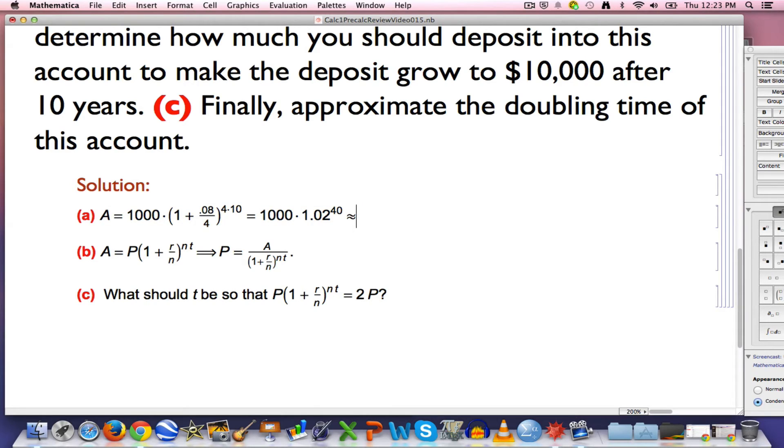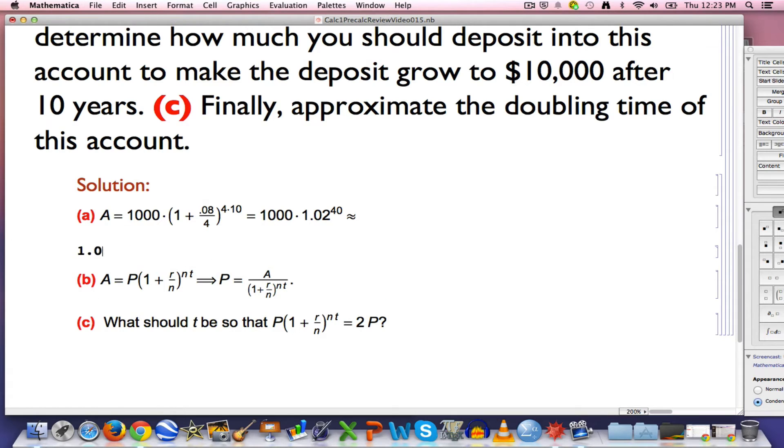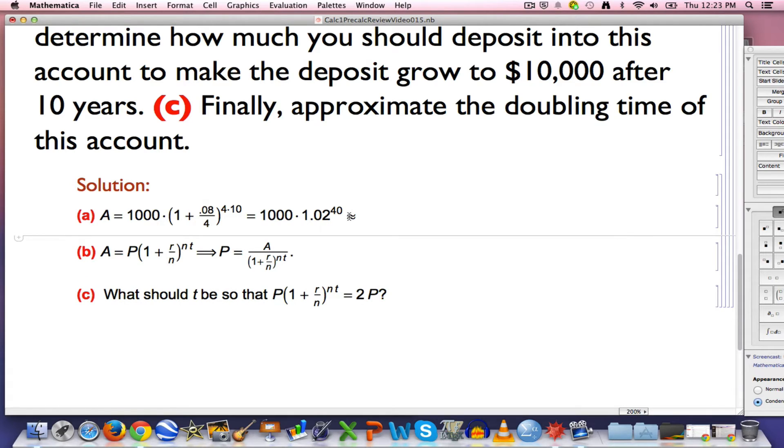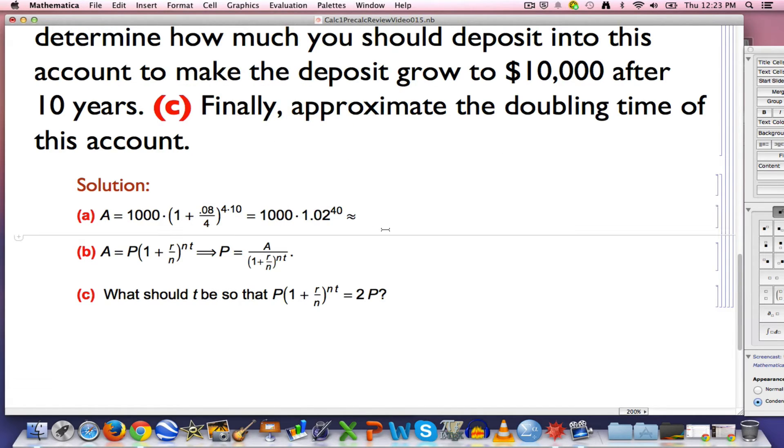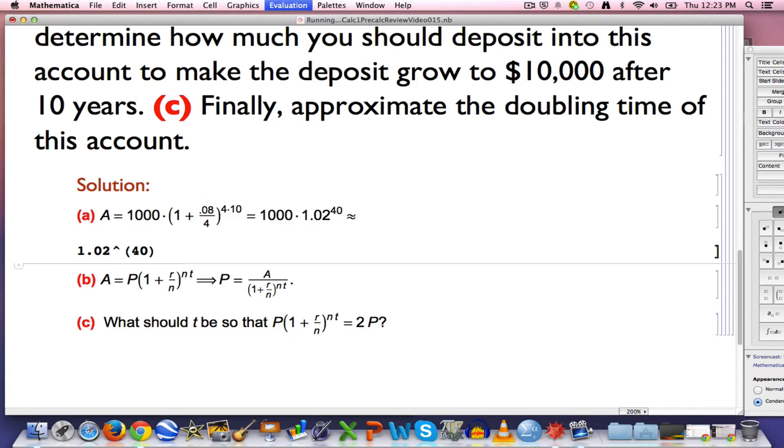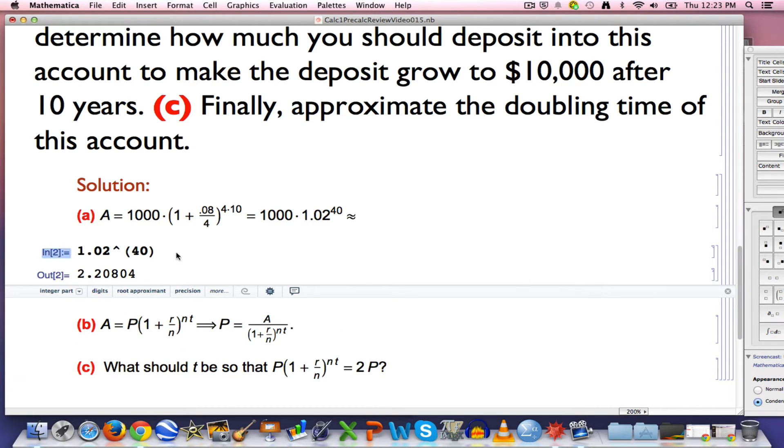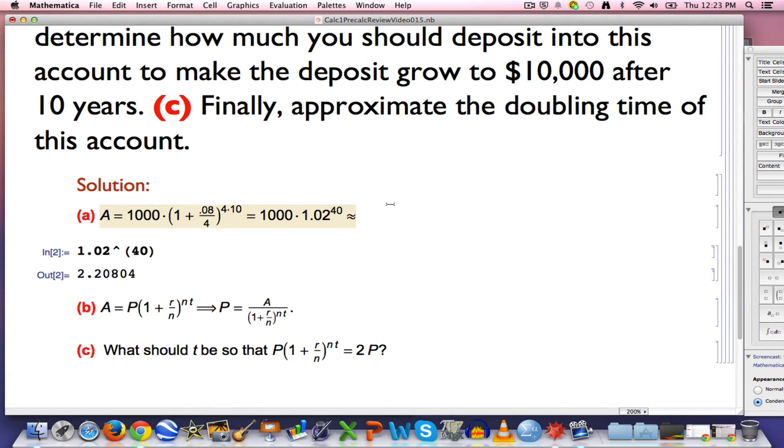Next, go ahead and approximate this. I'll go ahead and approximate it on Mathematica. You can use your calculator, though I will mention you want to pay attention here. When I've got this stuff here, that is in text mode. If I want Mathematica to do math, I want to click between the cells here until I see a horizontal line. That tells me Mathematica is ready to do math. For example, 1.02 to the 40th power is about 2.20804. Multiply that by 1,000 at the end, you get about $2,208.04 as the answer for part A.